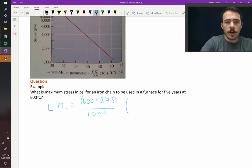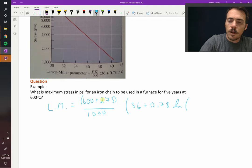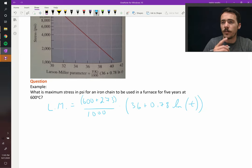Multiplied by, in this case, for this type of iron, its constants are 36 plus 0.78 times the natural log of t, where t needs to be in hours. So we need to go from five years to hours.